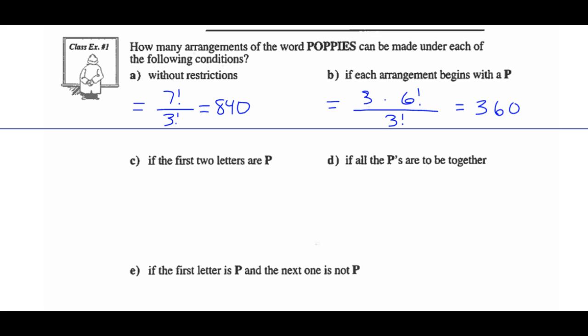Part C — if the first two letters are P. The first letter could be a P (3 choices), the second letter could be a P (2 choices), and then there are 5 letters left, arranged in 5 factorial ways. Divide out the 3 P's by 3 factorial. So 3 times 2 times 5 factorial divided by 3 factorial gives us 120 options.